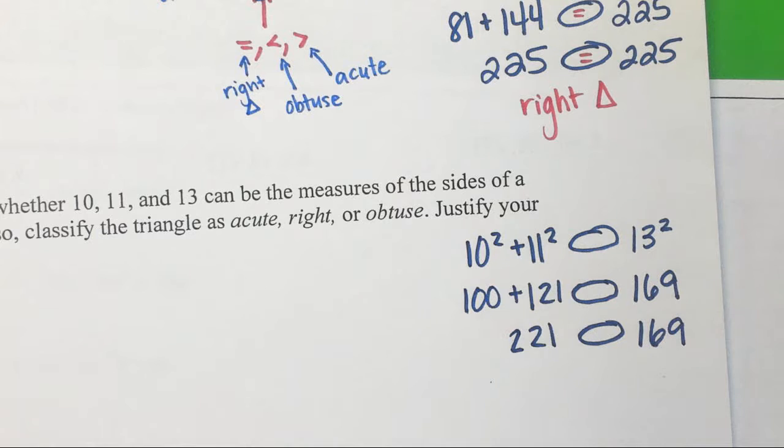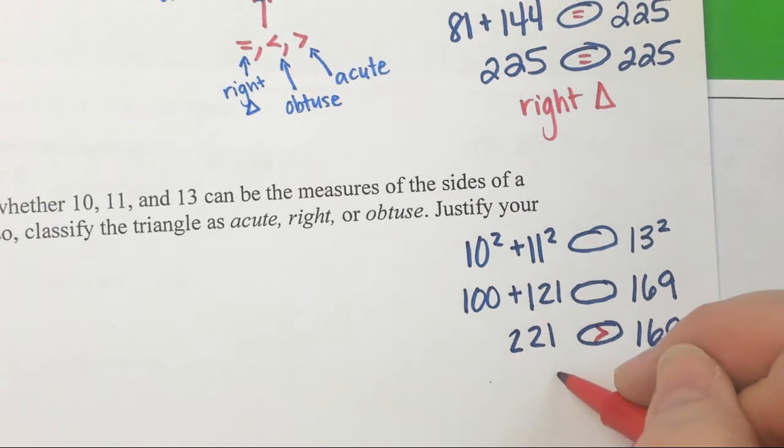Do we decide 221 is less than, greater than, or equal to 169? Oh, it's greater than? Well, it's the opposite of what you think. Since we put the greater than symbol, what kind of triangle do we have? An acute triangle.